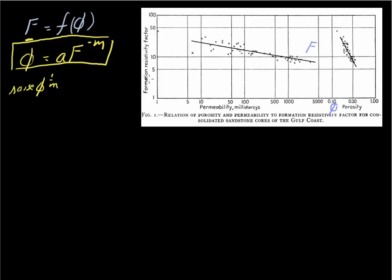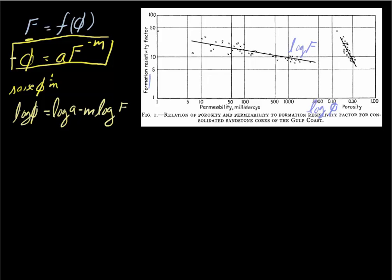F is plotted on a logarithmic-logarithmic scale — 1 to 5 here, 5 to 50 there — so what we're really seeing is that the log of F varies linearly with the log of phi. Working from this expression, we showed that the log of phi is equal to the log of a minus m times the log of F.